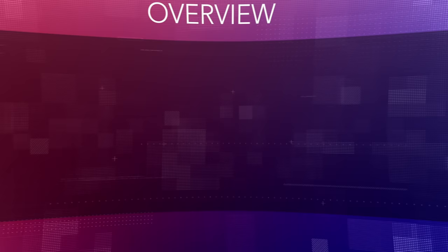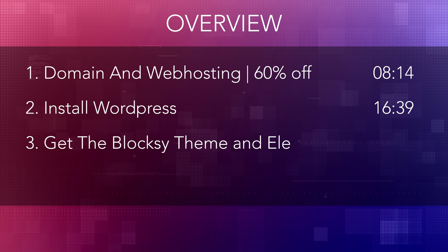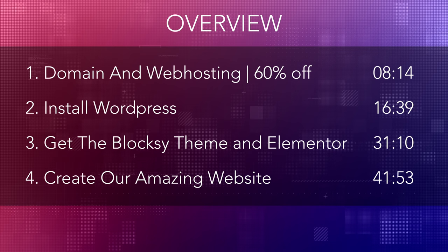What are the four things we're going to do in this tutorial? If you're starting from scratch, I can show you how to get a domain name and web hosting, and I can give you 60% discount. After that we'll install WordPress, then get the Bloxy theme and the Elementor page builder. When that's done, we'll create an amazing website. If you already have a domain name, web hosting, and WordPress installed, you can skip to step three using the timestamp.